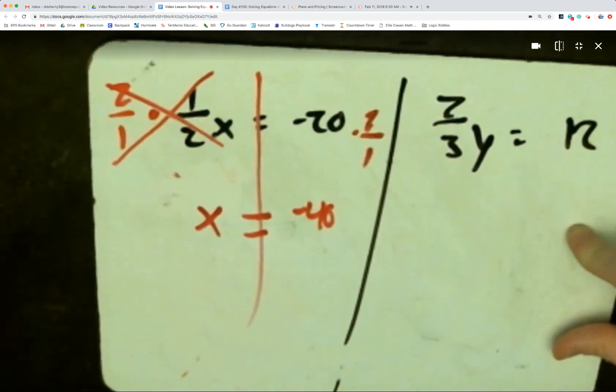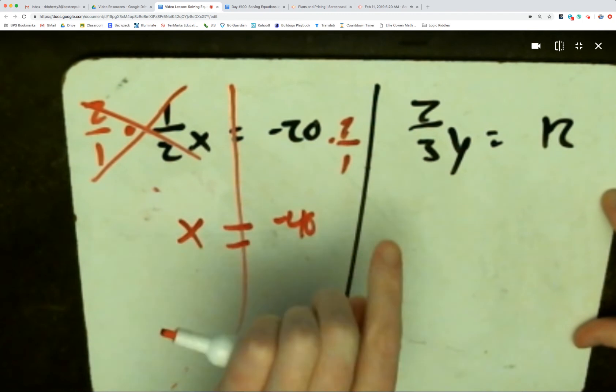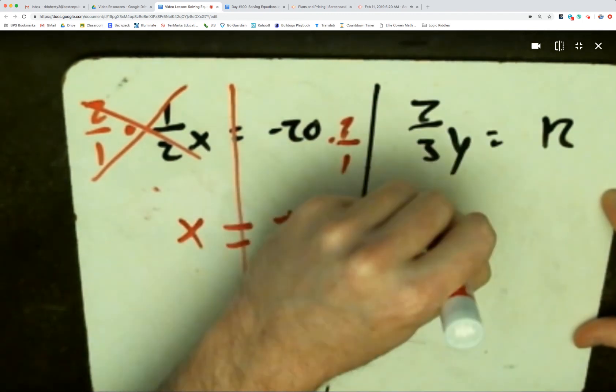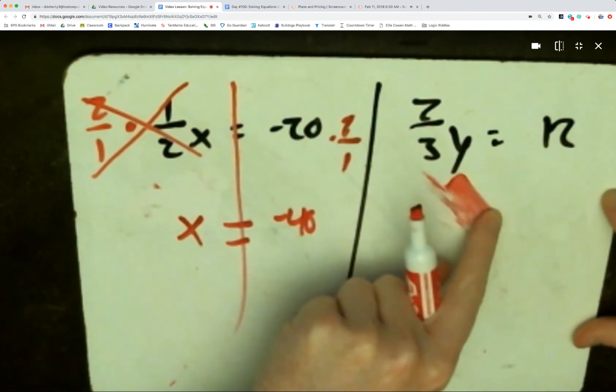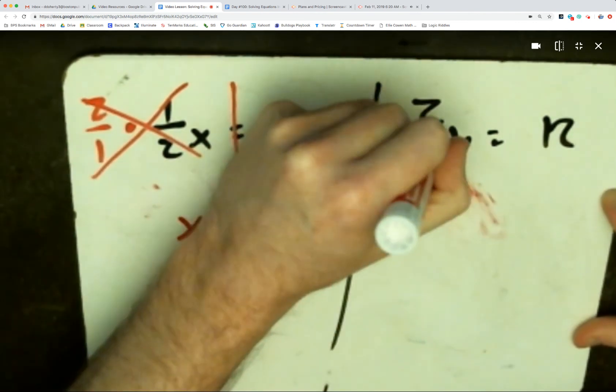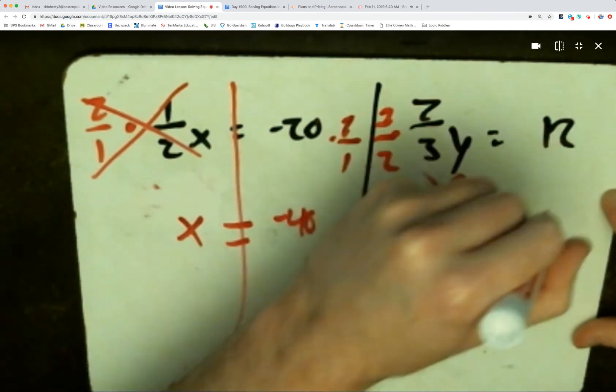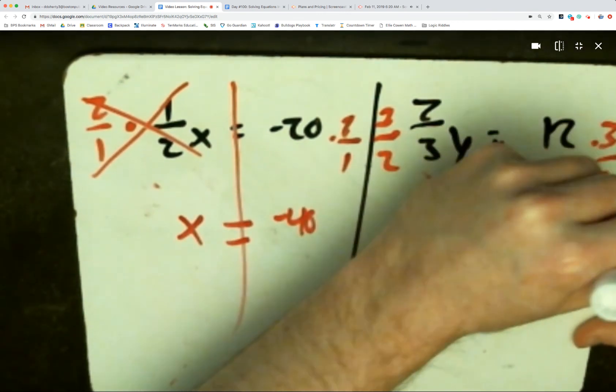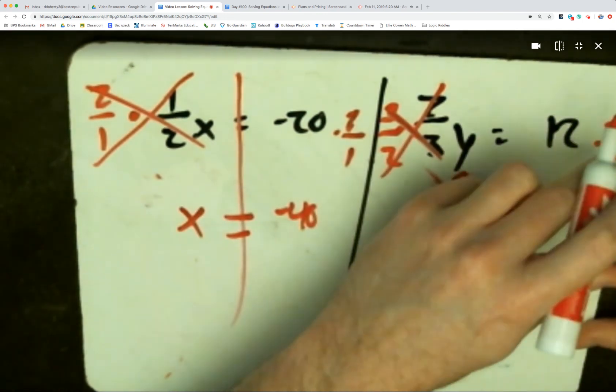For the second example, the inverse of multiplying by two-thirds is to divide by two-thirds. But we know dividing by two-thirds really just means multiply by 3 over 2. So I multiply both sides of the equation by 3 over 2 because that cancels out two-thirds. 12 times 3 is 36.